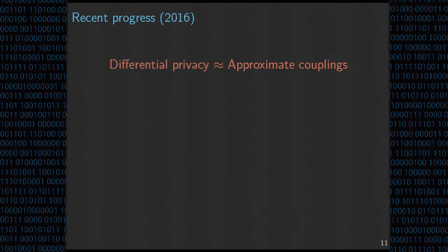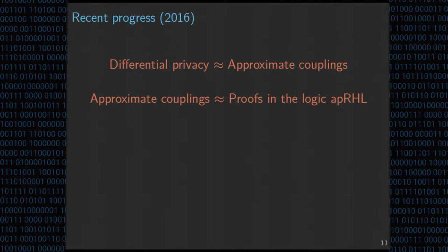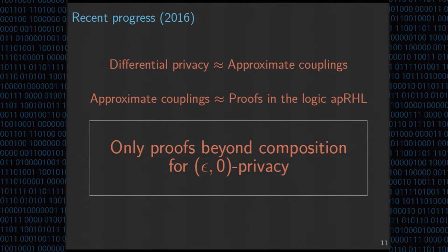There has been recent progress. We had some recent work that gave some of the first formal proofs of privacy for mechanisms beyond composition. It relied on a connection we proposed showing that differential privacy can be seen as an approximate notion of probabilistic coupling. Using that connection, we also showed that approximate couplings correspond to proofs in the logic APRHL. Given these connections, we were able to verify privacy for one version of Above Threshold. However, we only considered proofs beyond composition for epsilon-zero privacy, not epsilon-delta privacy.